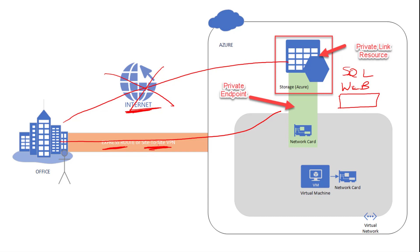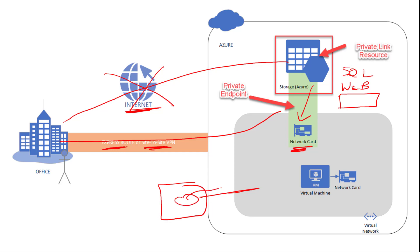That is the simplicity. In practical terms, all you are doing is creating a network card in your virtual network and connecting that card to your Azure public resource — whether that is Azure Storage, Azure SQL, or Azure Web App. And then you are able to connect to that storage account, SQL database, or web app through your ExpressRoute or site-to-site VPN. If you have other virtual networks that are peered with this particular virtual network, from those virtual networks you will also be able to connect through the network card.